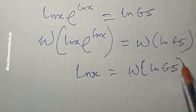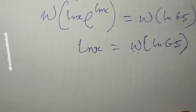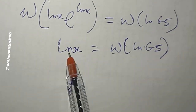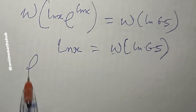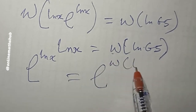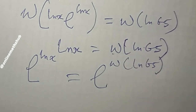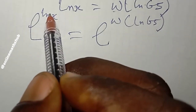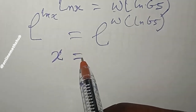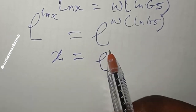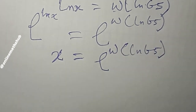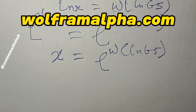Proceeding further, e^(ln x) equals x, so exponentiating both sides gives: x = e^(W(ln(65))). So the solution is x equals e raised to the Lambert W function of ln(65). Now I'll head to WolframAlpha.com to compute the decimal value of this expression.